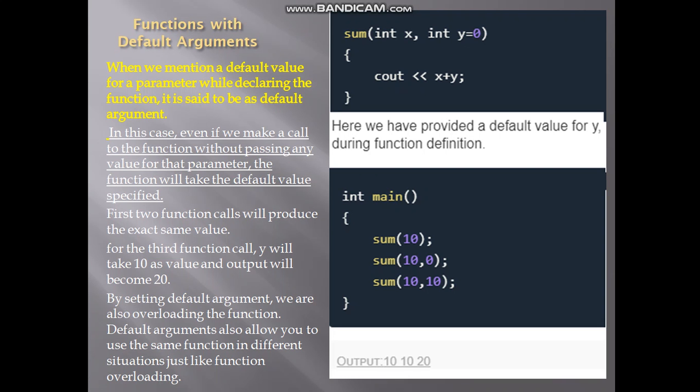In the main function, 'sum' is called three times. The first call passes only one parameter; the second call passes two parameters: 10 and 0; and the third call also passes two values: 10 and 10.